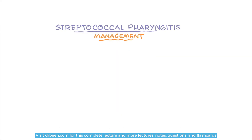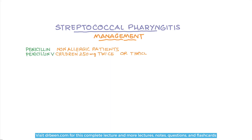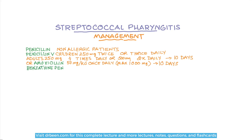For the management of strep throat, the CDC recommends penicillin in non-allergic patients. Penicillin V: children 250mg twice or three times daily; adults 250mg four times daily or 500mg twice daily for 10 days. Or amoxicillin 50mg per kg once daily, maximum 1000mg for 10 days. Or benzathine penicillin G IM one dose: less than 27kg give 600,000 units; greater than 27kg give 1,200,000 units, one dose.